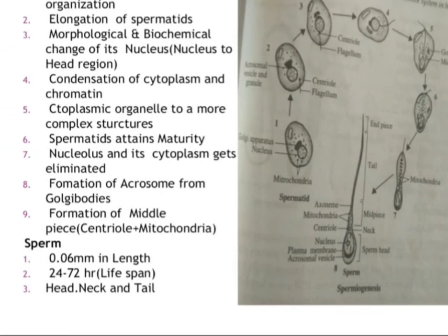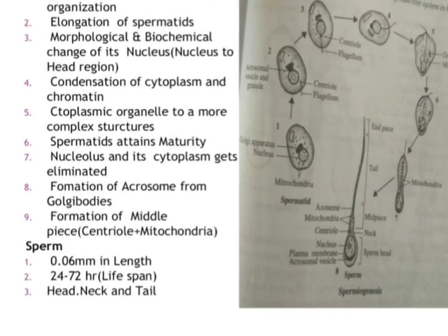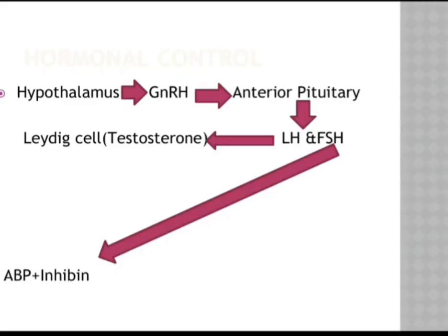The sperm is generally 0.06 millimeters in length with a lifespan of 24 to 72 hours, and its structure is divided into head, neck, and tail. Regarding hormonal control, the hypothalamus produces gonadotropin-releasing hormone, which acts on the anterior pituitary. The anterior pituitary releases two hormones: luteinizing hormone (LH) and follicle-stimulating hormone (FSH). LH acts on the Leydig cells — found between the seminiferous tubules — which produce testosterone, essential for the differentiation of the male reproductive system and for spermatogenesis to occur.